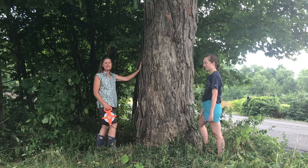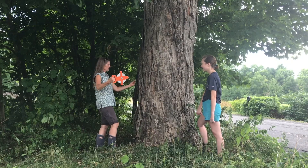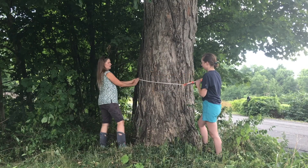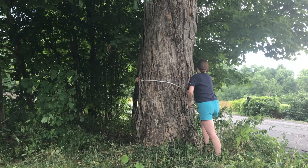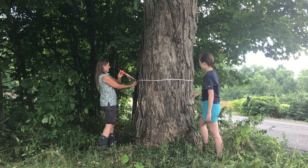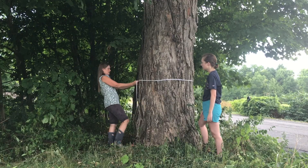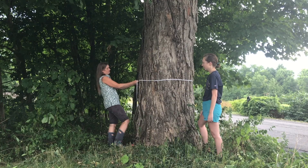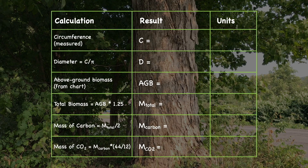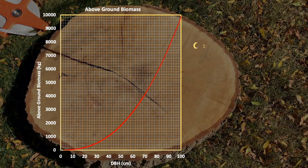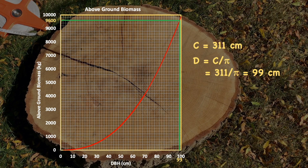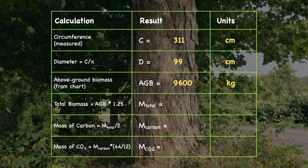For a really big tree like this one, we need our big tape measure and a friend. We've got 3 meters and 11 centimeters. We'll use this table to help us go through the calculation step by step. First, enter the circumference that we measured: 311 centimeters. Then divide by pi to find the diameter: 99 centimeters. Next, we go to the biomass chart and find the corresponding above-ground biomass for a maple tree with a 99 centimeter diameter, and we see that it's 9,600 kilograms. Now we have to account for the mass of the roots, which we can do by multiplying our above-ground biomass by 1.25. This gives us the total biomass.